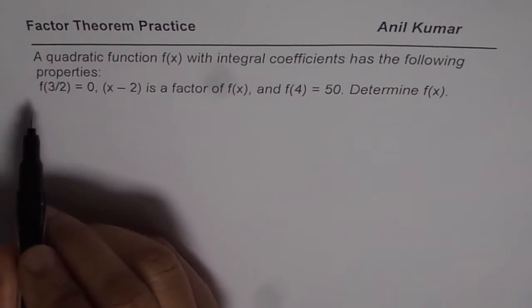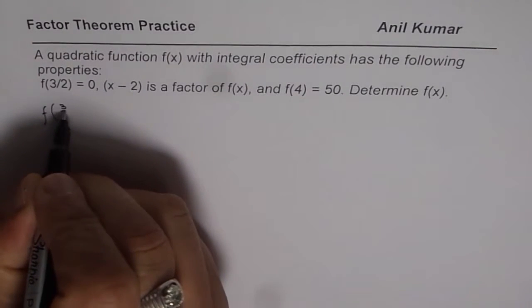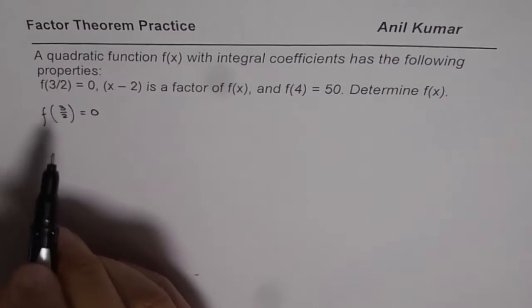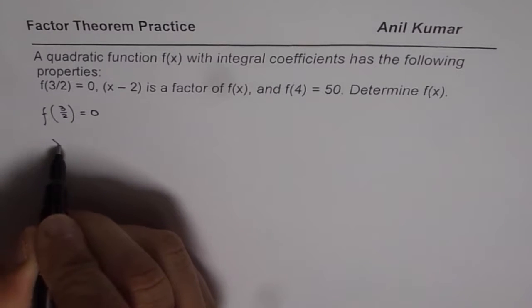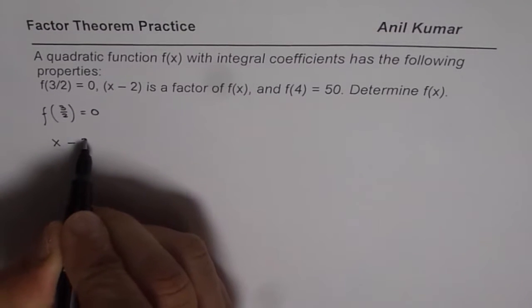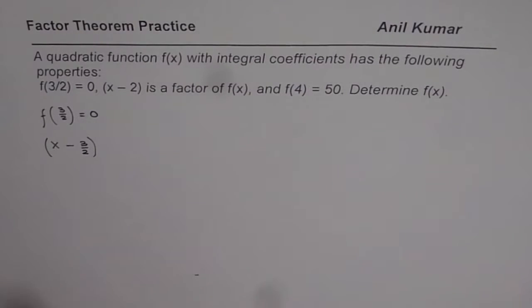Now, when we say that f(3/2) is equal to 0, it means the remainder is 0 when we divide by x minus 3/2. When we divide f(x) with x minus 3/2, we get 0 remainder.